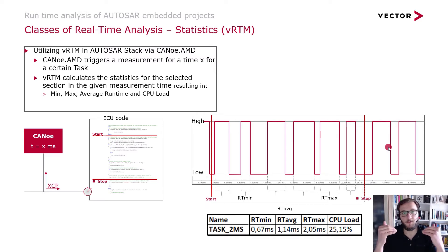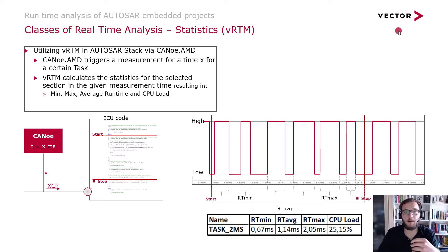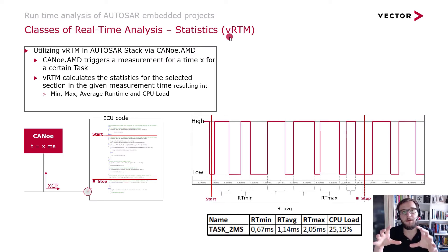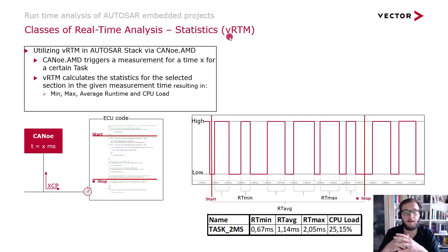In order to do the statistical measurements you will additionally need the VRTM. This stands for Runtime Measurement and it is a module that you can select within the Vector Microsar stack. In our Autosar stack, within the Autosar monitoring and debugging cluster, you will find this module RTM.